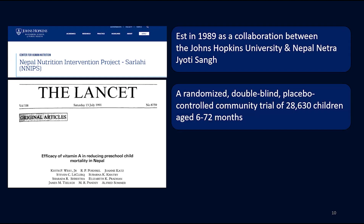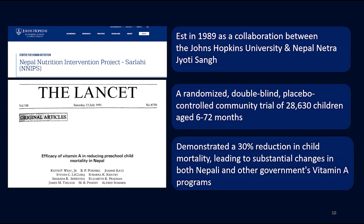Established in 1989 as a collaboration between Johns Hopkins University and the Nepal Health Foundation, this was a randomized double-blind placebo-controlled community trial of 20,630 children aged 6 to 72 months. The trial demonstrated a 30% reduction in child mortality, leading to substantial changes in both Nepali and other governments' vitamin A programs.